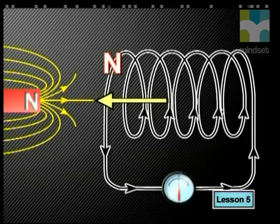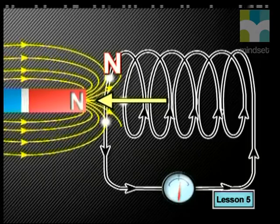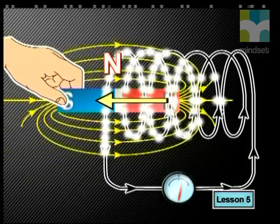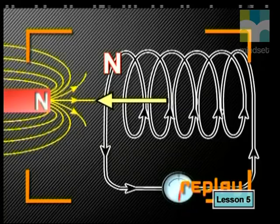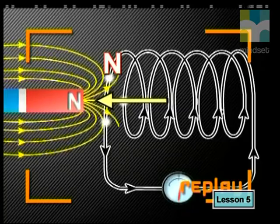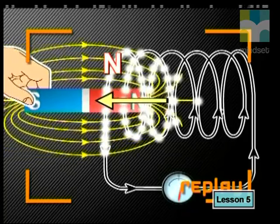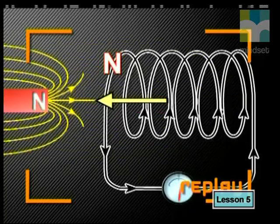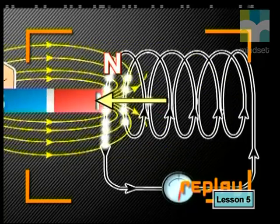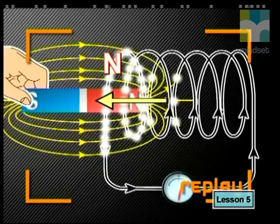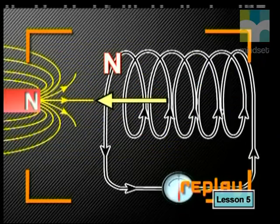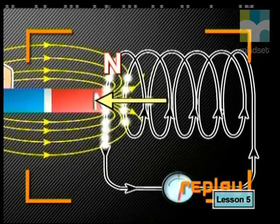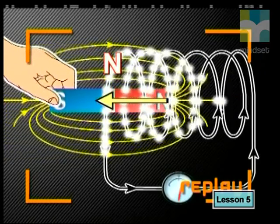In other words, as the north pole of the magnet moves towards the coil, it induces a magnetic field. This induced magnetic field works to reduce or oppose the inducing action of the magnet by exerting a force on the magnet that is opposite to the direction of the magnet's motion.